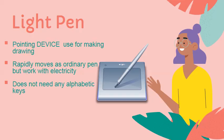Light pen is a pointing device which is used for making drawings. Light pen rapidly moves on the screen just like an ordinary pen, but it works with electricity. Light pen does not need any alphabetical keys.